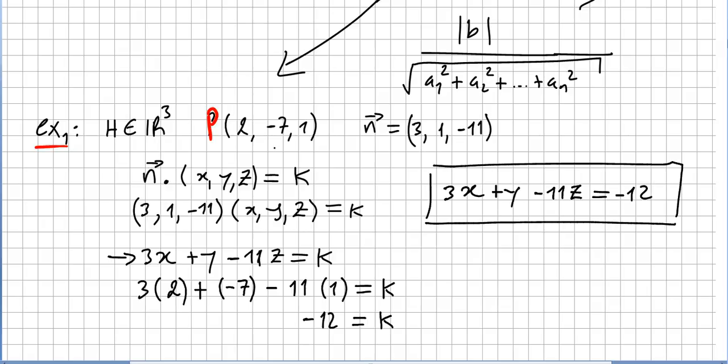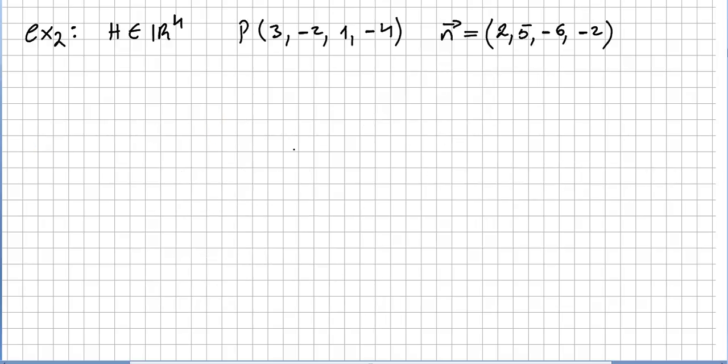Let's just take another example. Let's take a hyperplane in R^4, and we want the hyperplane to pass through point (3, -2, 1, -4) with normal (2, 5, -6, -2). Just try to do it using the previous mechanism and see if you get to the same result as I do.